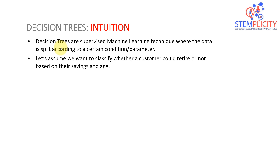We're going to see that decision trees are actually very simple and straightforward — they resemble what we do in real life when we want to make a decision, whether it's about buying a car, finding a job, or any decision basically. Decision trees are supervised machine learning techniques where the data is split according to a certain condition or parameter.